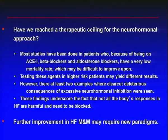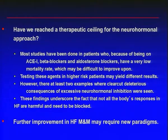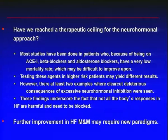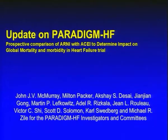Have we reached a therapeutic ceiling for the neurohormonal approach? Most studies have been done in patients adequately treated with good doses of ACE inhibitors, beta blockers and aldosterone antagonists, which have already significantly reduced mortality, making it difficult to show further improvement. However, one editorial suggested that testing these drugs in higher risk patients may yield different results, and that not all of the body's responses in heart failure are harmful and need to be blocked. This editorial concluded that further improvement in heart failure may require a new paradigm.